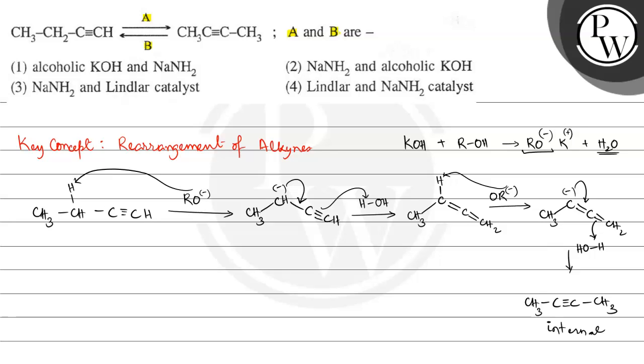And the previous that is a terminal alkyne. So terminal alkyne to internal alkyne, the reagent needs to be RO- which is alcoholic KOH. If we add alcohol in KOH then we will have alkoxide ion form. So reagent A is alcoholic KOH.